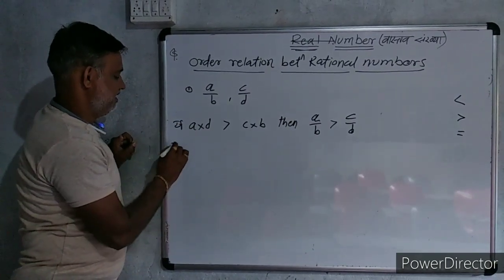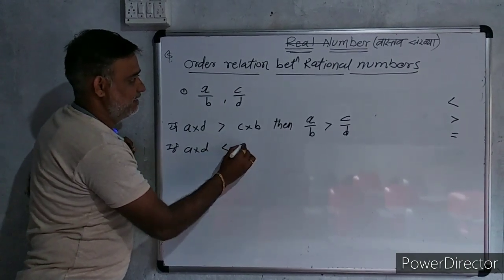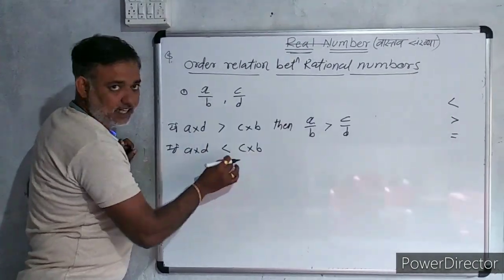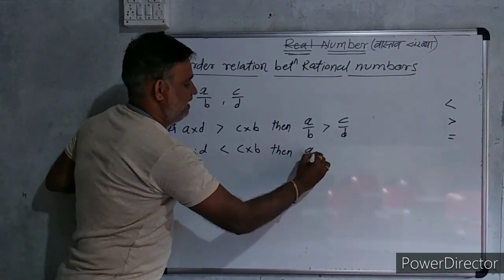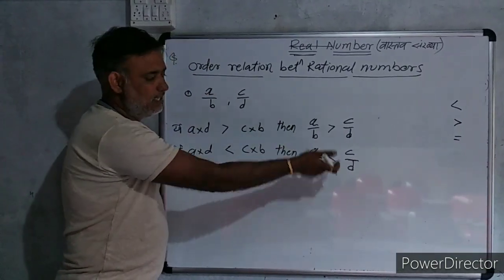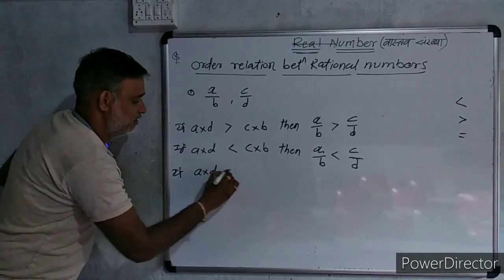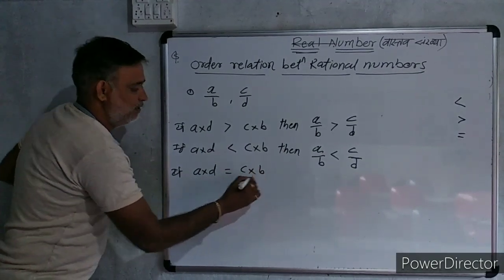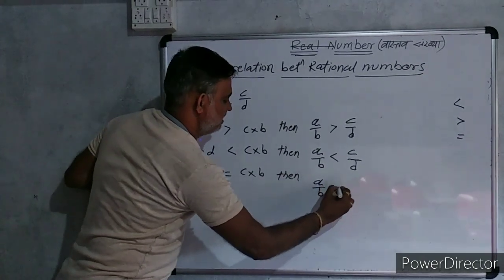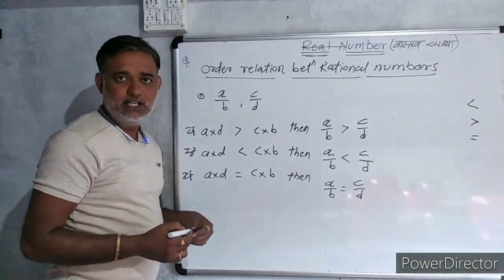Similarly, if A times D is less than C times B, then A/B is less than C/D. Or we can say in simple words A upon B and C upon D. Similarly, if A times D is equal to C times B, then A upon B is equal to C upon D. These are the three possibilities of the order relation.